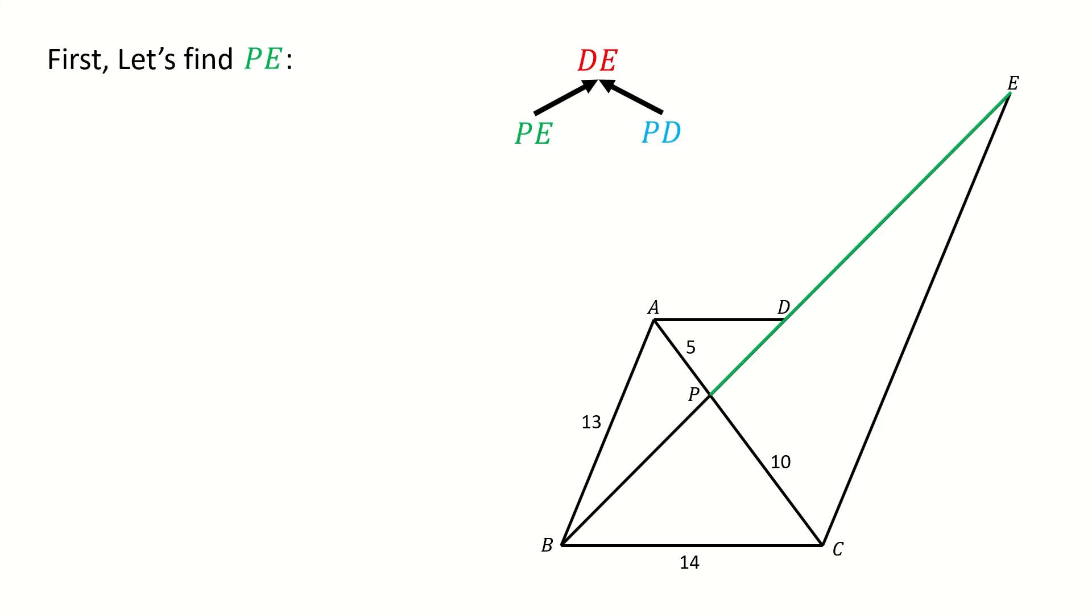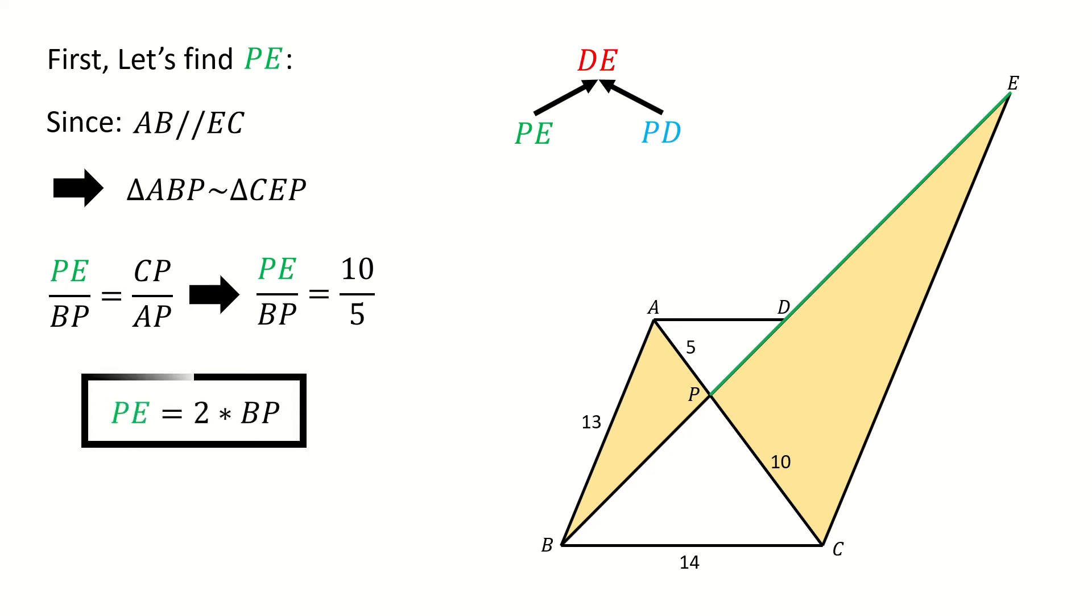First, let's see how to find PE. Because we are given AB is parallel to EC, triangle ABP is similar to triangle CEP. So we get PE over BP equals CP over AP. Then we plug in numbers: PE over BP equals 10 over 5. So we get PE equals 2 times BP. To calculate PE, we need to find BP first.